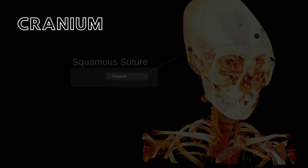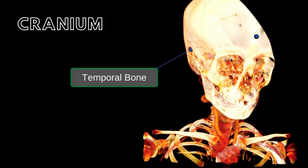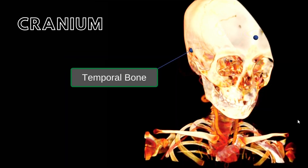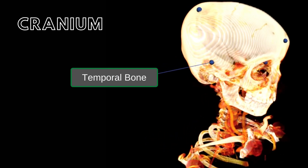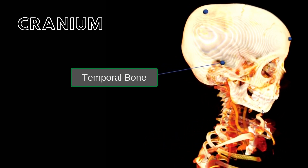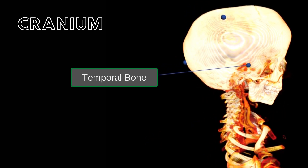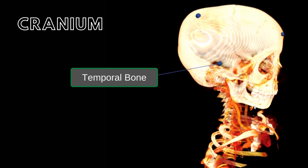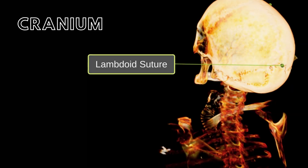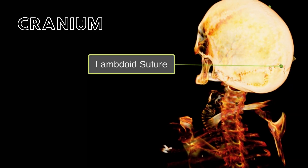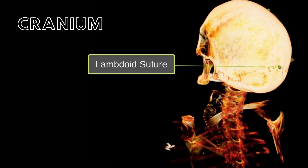The temporal bones are also a left and right pair that form the sides and the base of the skull and surround the ear canal. The parietal bones are joined posteriorly to the occipital bone by the lambdoid suture.